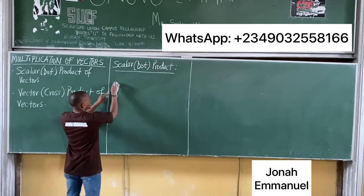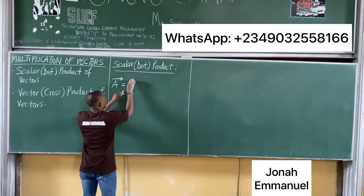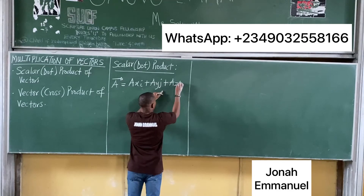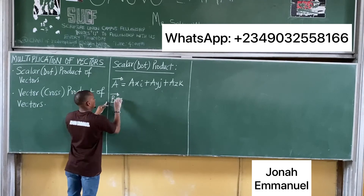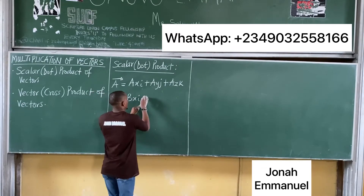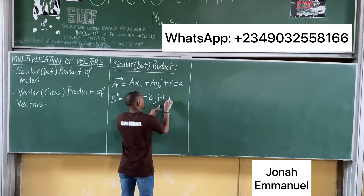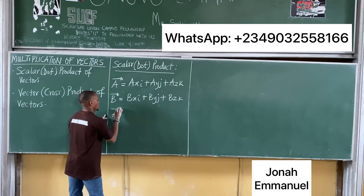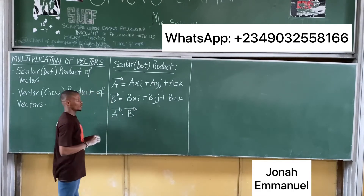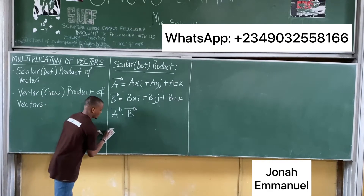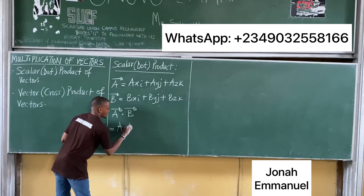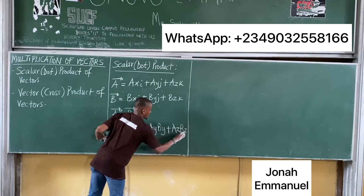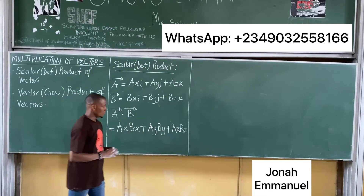Given two vectors a and b, the dot product of a and b is written as a·b. Mathematically, a·b is simply equal to ax·bx plus ay·by plus az·bz. This is the formula for the dot product of two vectors. Let's look at a proof of this.